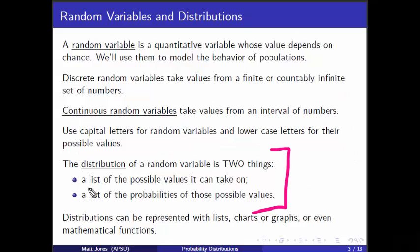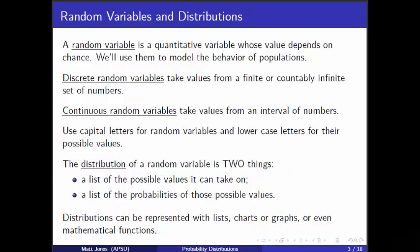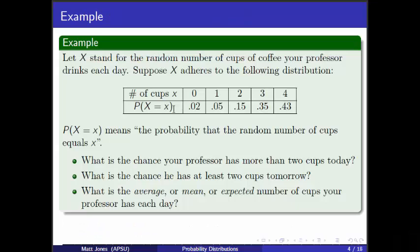The distribution of a random variable is really two things: one, a list of all the possible values that the variable can take on, and two, a list of all the probabilities of those values. Distributions can be represented as functions, lists, charts, or graphs — many different ways — just as long as they indicate these two things: a list of all the possibilities and a list of all the probabilities.